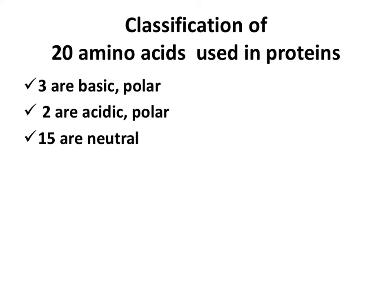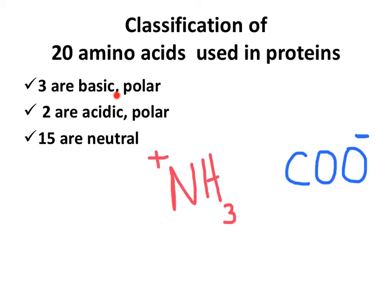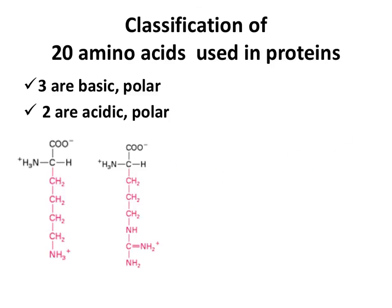The classification of amino acids includes three that are basic, two that are acidic, and 15 that are neutral. The three basic amino acids contain nitrogen with a plus charge on the side chain — they are polar and basic. The two acidic amino acids will have the carboxylic acid group deprotonated on the side chain. The three basic amino acids are lysine, arginine, and histidine.